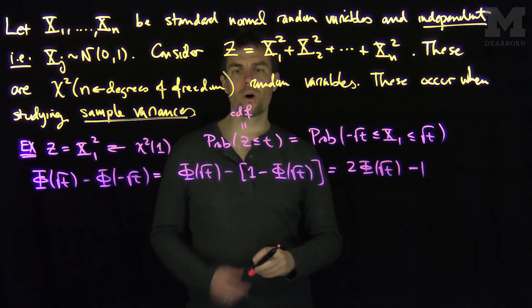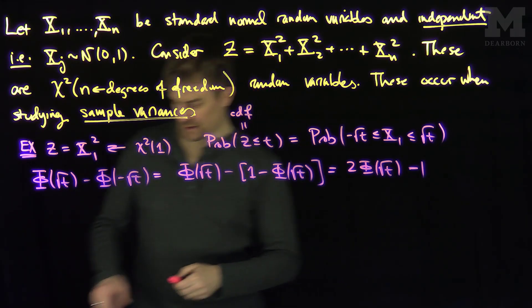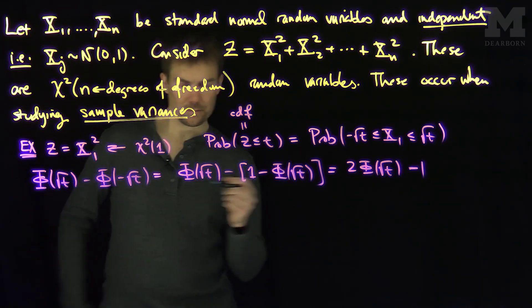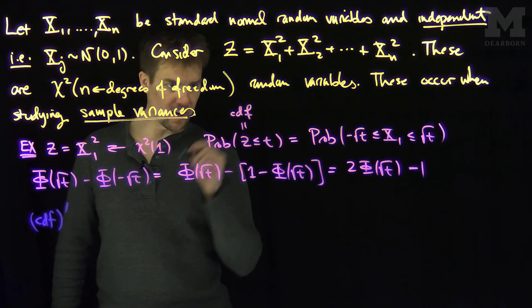And this is going to be two phi of the square root of t minus one. So, I can find the probability distribution of a chi-squared with one degree of freedom by differentiating this.